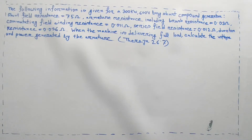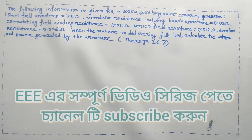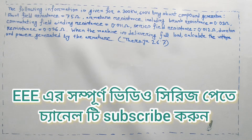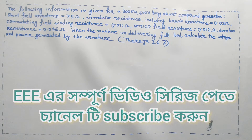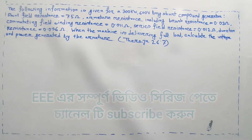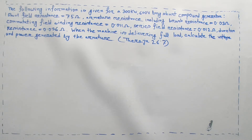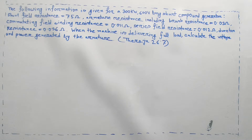In this class, I have to solve this problem. This is example number 26.7. There are many topics included in this class — please check the playlist in our DC generator series. I will explain all of this topic. Let's start.